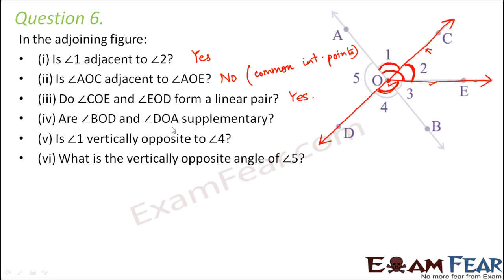Are angle BOD and angle DOA supplementary? Angle BOD is angle 4 and angle DOA is angle 5. If you look at angle 4 and angle 5, they together form a straight line AOB, which means they make 180 degrees. So angle 4 plus angle 5 equals 180 degrees. Therefore, yes, they are supplementary.